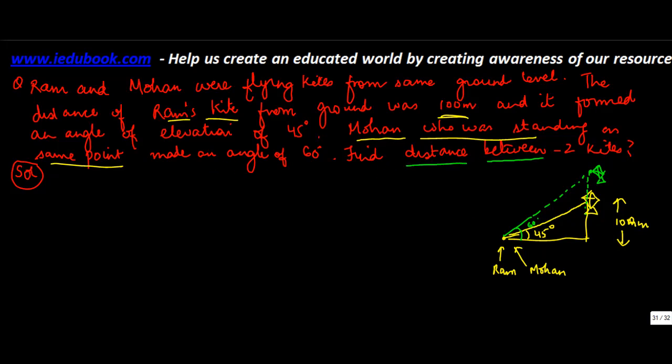Find the distance between the two kites. So you have to find out what is the distance between these two kites, assuming they were in the same line. Because otherwise, if it is here, then obviously the distance differs.